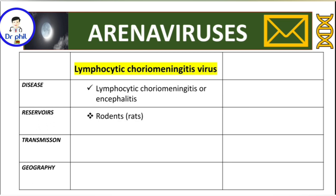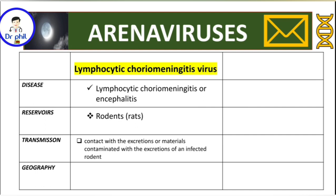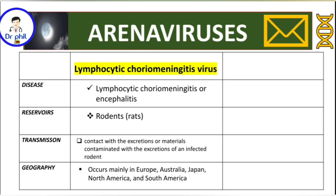The reservoirs are rodents, particularly the rat. Humans are actually incidental hosts. Transmission is through contact with excretions or materials contaminated by an infected rodent — for example, if the urine of an infected rat gets in contact with food. Geographically, the lymphocytic choriomeningitis virus is mainly found in Europe, Australia, Japan, North America, and South America.